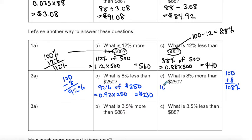So I'm finding 108% of $250, or that's the same as taking 1.08 times 250, which is $270.